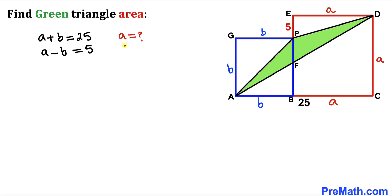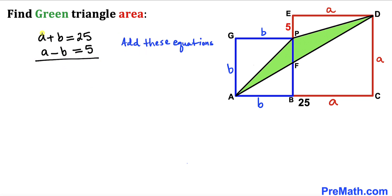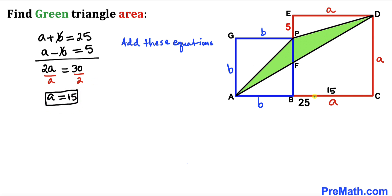Let's add these two equations. When we add them, the positive b and negative b cancel, so we get 2a equals 30. Dividing both sides by 2, our value of a turns out to be 15.